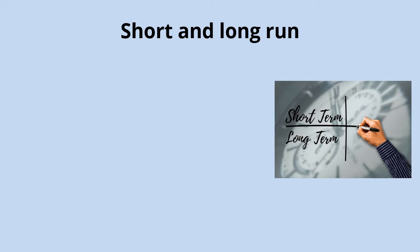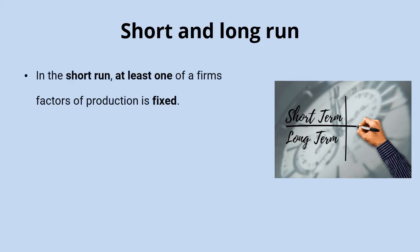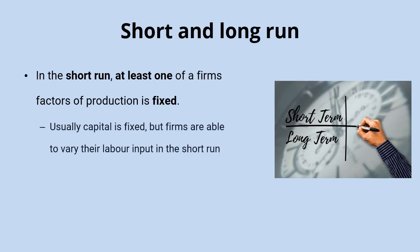Before we get to those different types of costs, you might hear costs referred to as being costs in the short run or costs in the long run, so it's important to get that distinction clear. In economics, in the short run we're talking about a period of time across which at least one of a firm's factors of production is fixed, and generally speaking it's usually going to be the capital that's fixed, but firms are able to vary their labor input.